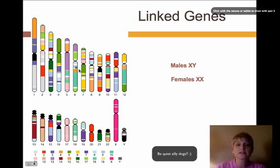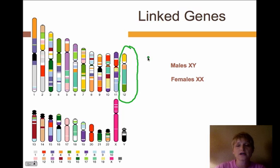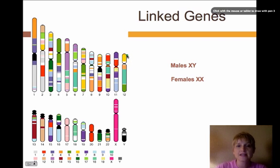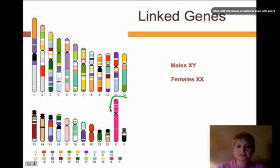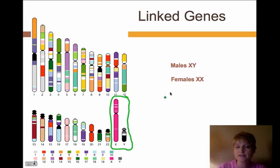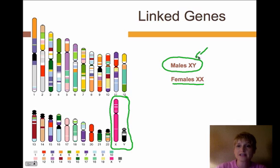We now know that some traits are linked on the genes. This diagram shows the 23 chromosomes that humans have. If we look at chromosome 12, it has genes on it — the different colors represent different genes. Those genes are not necessarily linked, but if they are close on the chromosome then they're probably linked together. If they're far away on the chromosome, like the yellow and this dark green, they're less likely to be linked. The farther away they are, they don't have an impact on each other. We also see that the X and Y chromosomes indicate whether it's a male or a female — males have an X and a Y chromosome, and females have two X chromosomes.